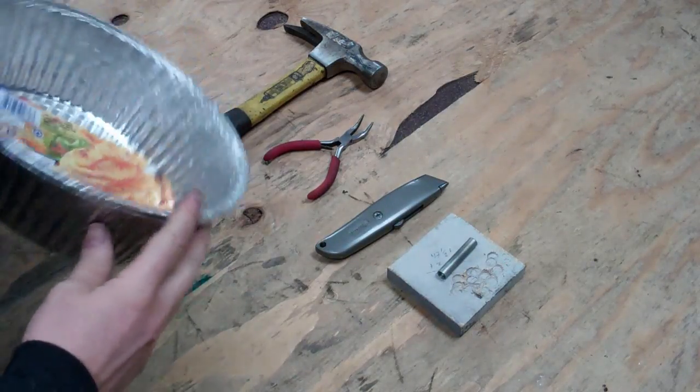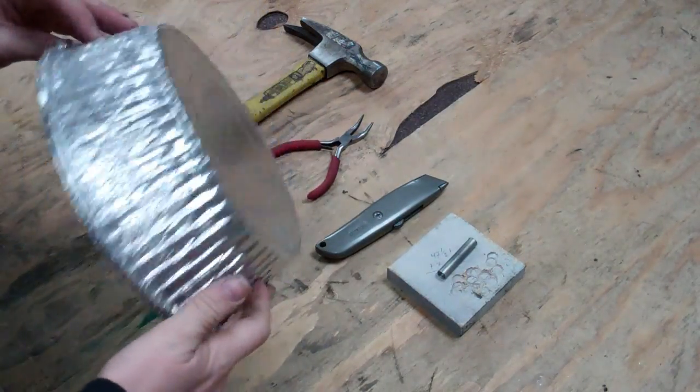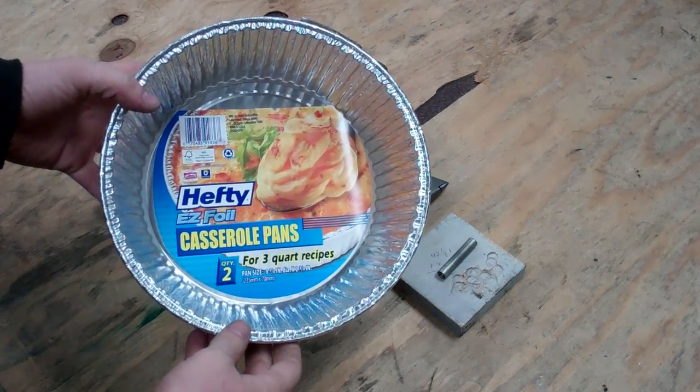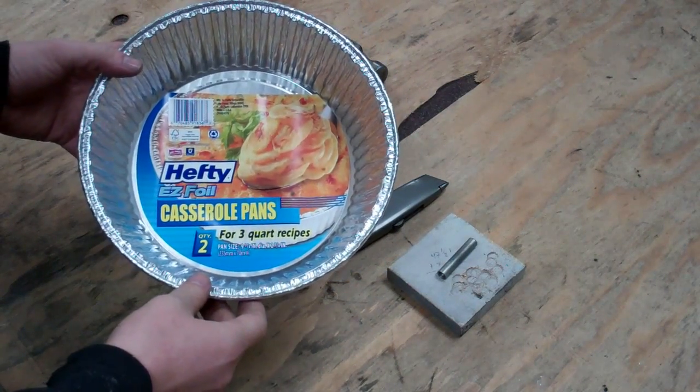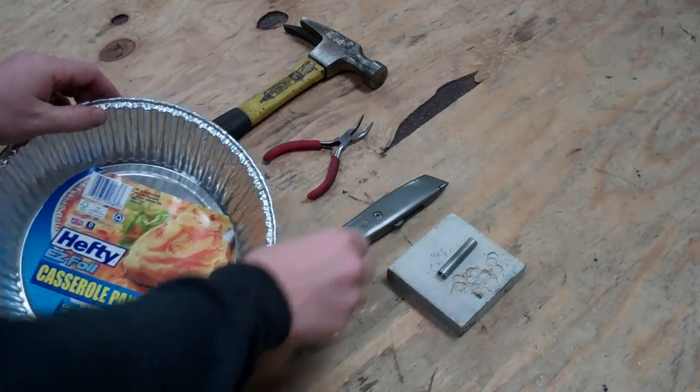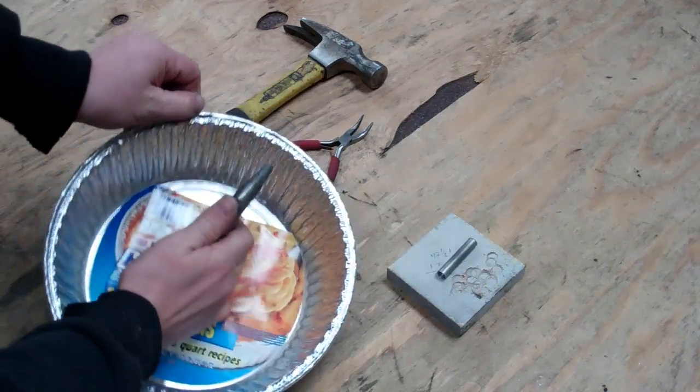So here's what you're going to need. I was wandering around Walmart looking for something that I could use, and I found these right here. It's a Hefty Easy Foil casserole pans, and they have a fairly thick foil on them. You get a two pack for two dollars, so obviously we're just going to be using one of those.